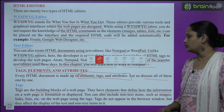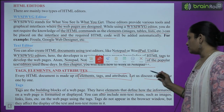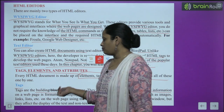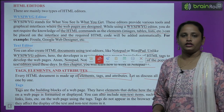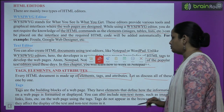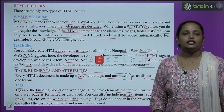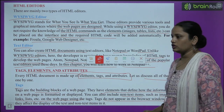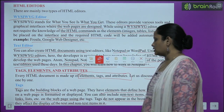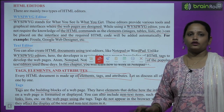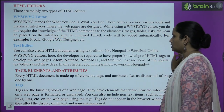Tags have elements that define how the information on a webpage is formatted or displayed. You can also include non-text items such as images, links, and lists using these tags. Tags do not appear in the browser window, but they affect the display of text and non-text items on the page.